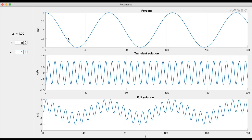So here we are forcing much lower than the natural frequency, and then the full solution of the system is the addition of the transient solution to the particular solution, which is a multiple of the forcing.